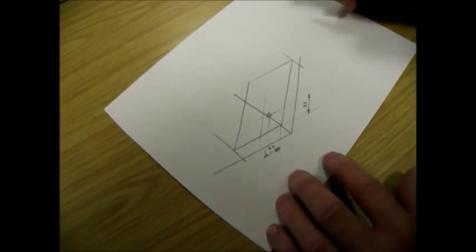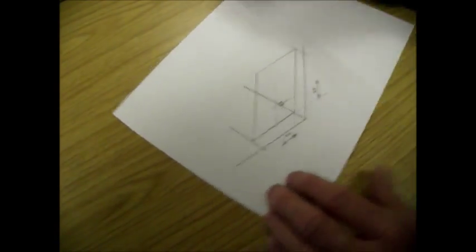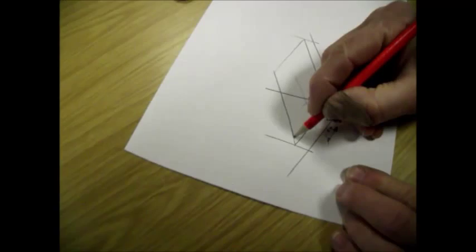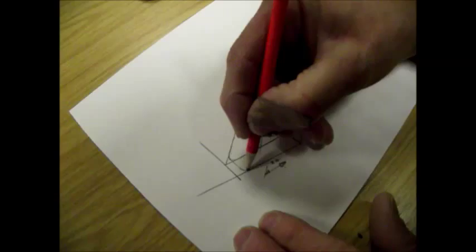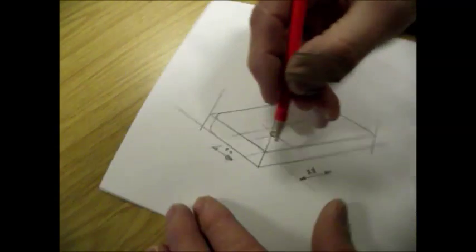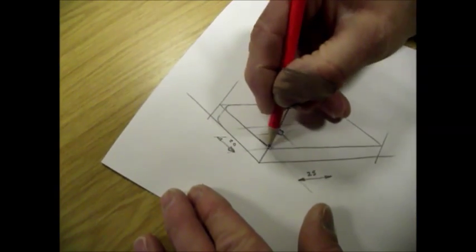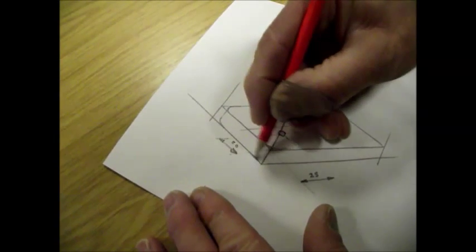Right, now to finish this drawing off, the corners are rounded. So we will just put a radius on there like that, drop a vertical line there and do the same shape round the bottom. Now this will all be faint when you do yours.